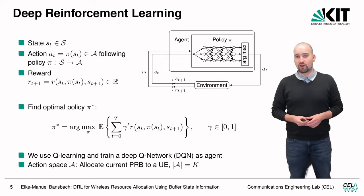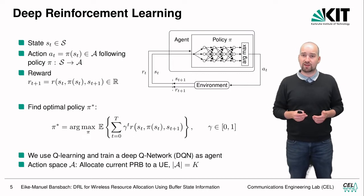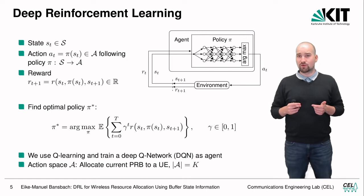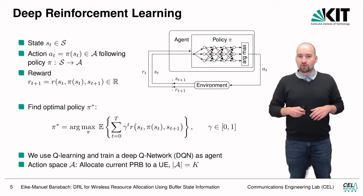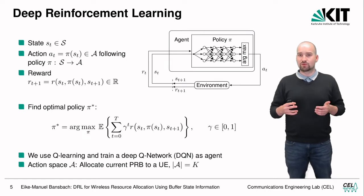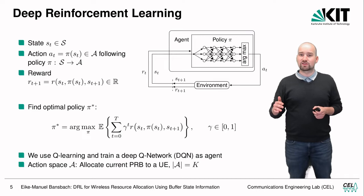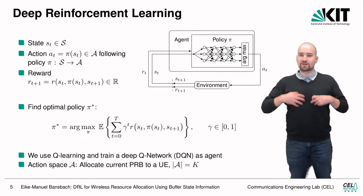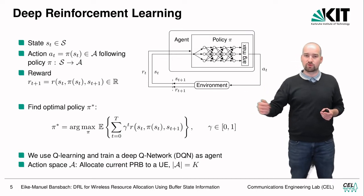The goal in reinforcement learning is to find the optimal policy, which maximizes the expectation over the instantaneous reward plus future rewards. We use a discount factor gamma to the power of t, which weights the immediate reward at one and sums future rewards up to capital T, weighted by a number smaller than one if gamma is less than one — making the next reward most important while still accounting for future rewards.